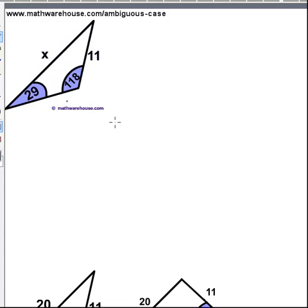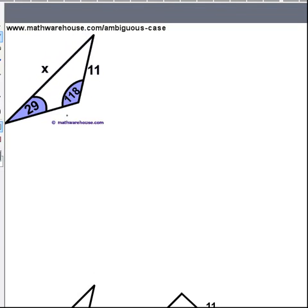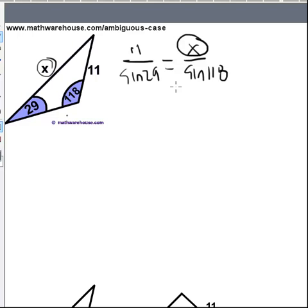Let's solve this triangle. There's some similarities to the other triangle. You'll notice we have a 29 here and 11 here, just like the other triangle. And we want to find the value of this side length X here. Law of sines, just set it up. 11 over the sine of 29 equals X over the sine of 118.